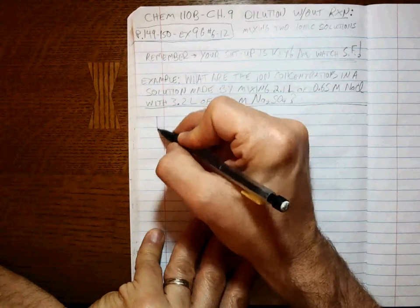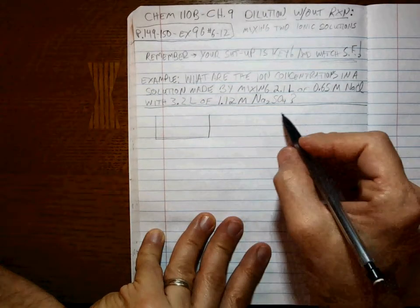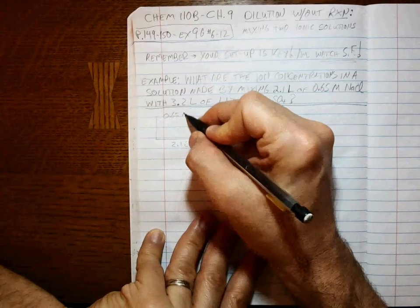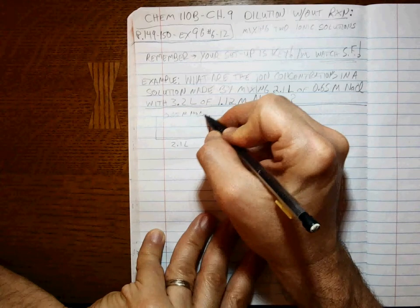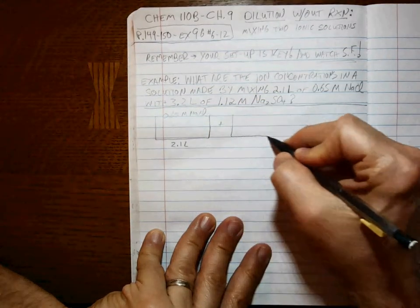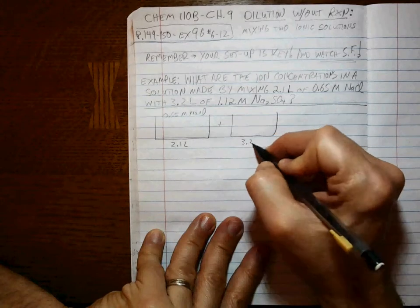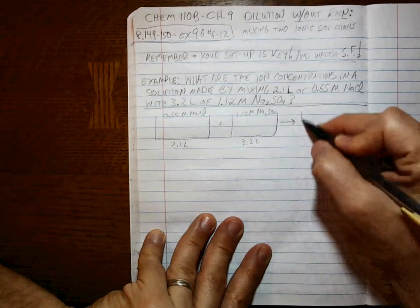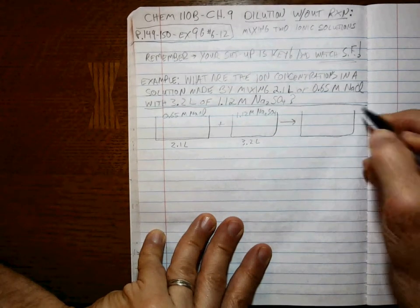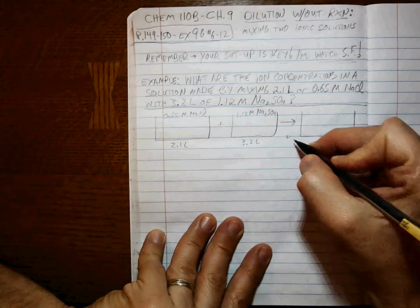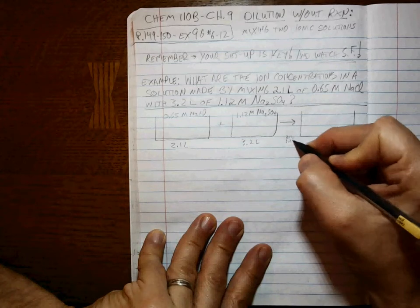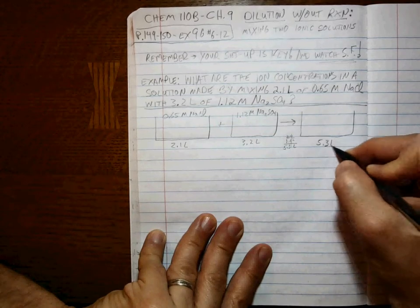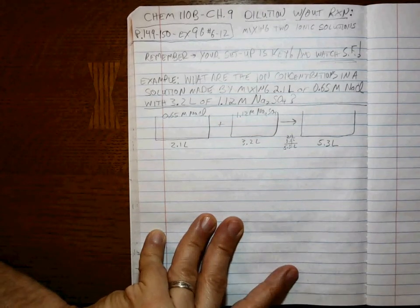All right, we've got beakers. I like to draw on beakers. 2.1 liters of 0.65 molar sodium chloride added to 3.2 liters of 1.12 molar sodium sulfate. What are the iron concentrations at the end? 2.1 plus 3.2 liters adds up to 5.3 liters at the end. So that's easy enough.